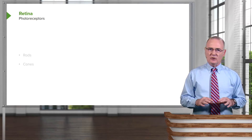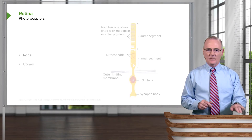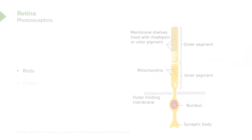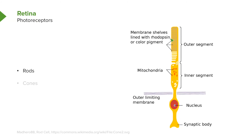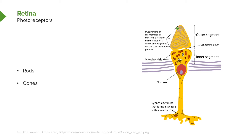Now let's take a look in greater detail at the photoreceptors. First, we have the rods — here's a nice illustration demonstrating a rod. And then the cones are shown here, or at least one cone. You can see this cone-shaped appearance to the outer segment of this photoreceptor.